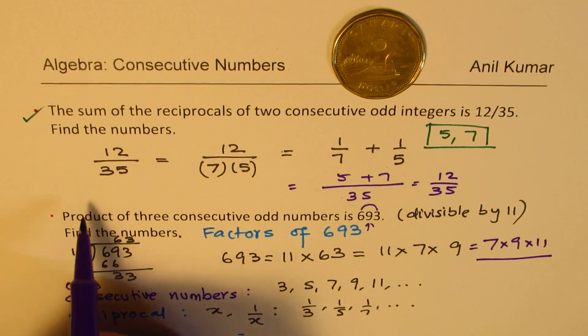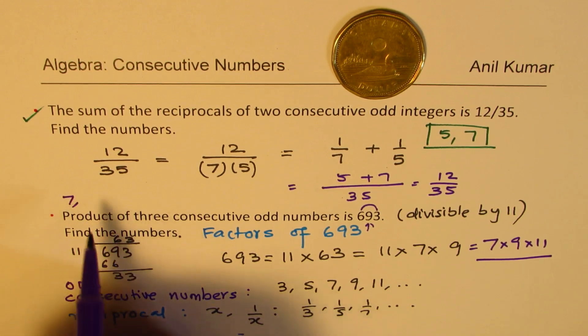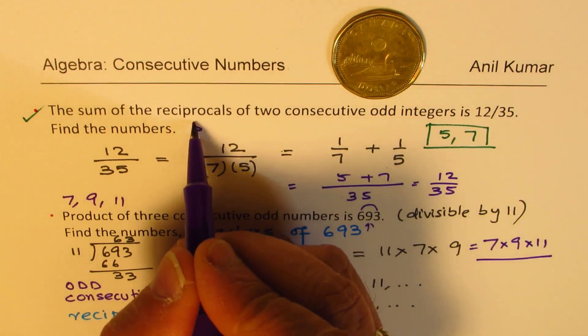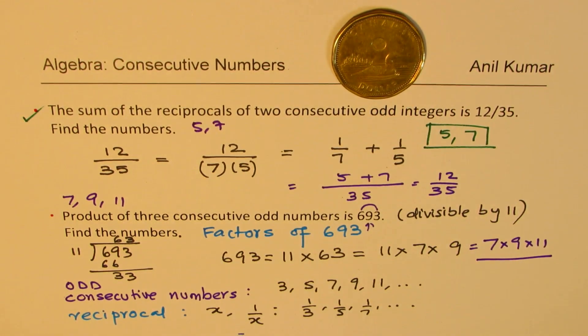So the answer for the second one is that the numbers are 7, 9 and 11. And for the first one, we found the numbers were 5 and 7. So I hope that helps.